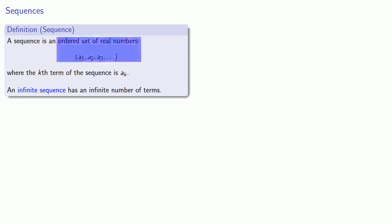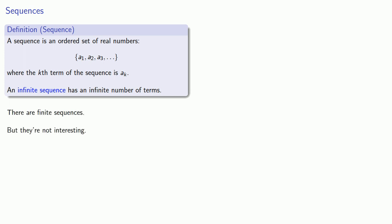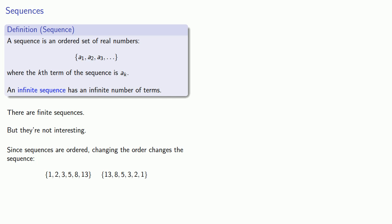A sequence is an ordered set of real numbers where the kth term of the sequence is designated a sub k. This set could be finite or infinite, so there are finite sequences, but they're not very interesting. Since sequences are ordered, changing the order changes the sequence. So the sequence 1, 2, 3, 5, 8, 13 and the sequence 13, 8, 5, 3, 2, 1 — even though they consist of the same numbers, because those numbers are in a different order, these two sequences should be regarded as different sequences.